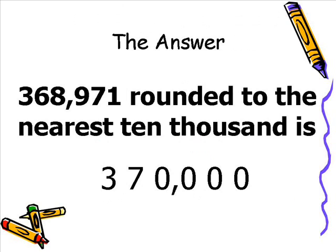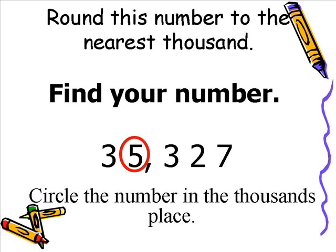So 368,971 rounded to the nearest 10,000 is 370,000. Let's try this one more time with another example. Let's round 35,327 to the nearest 1,000. Remember the point — find your number. In this case, the 5 is in the 1,000 place, so that 5 is circled.